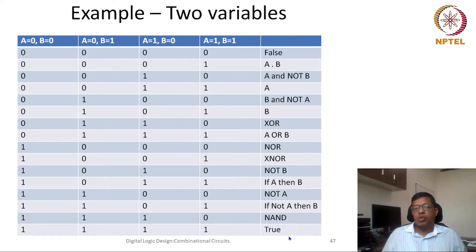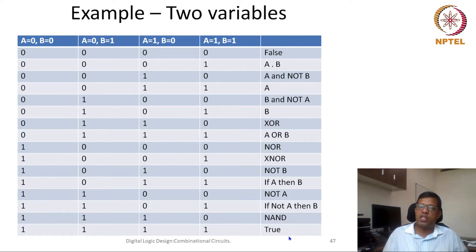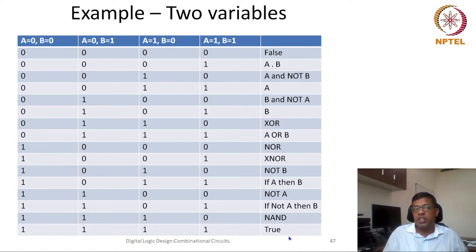These are the 16 different combinations which we can create using two variables. If the number of variables are more, then the number of combinations will also be more. As we said, if the number of variables are 4, then more than 64,000 distinct functions can be created based on what the truth table is.